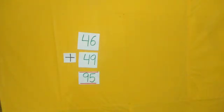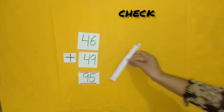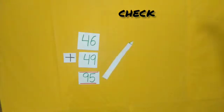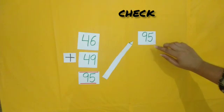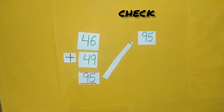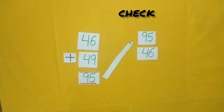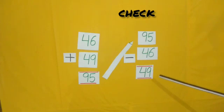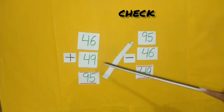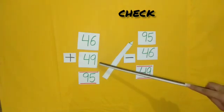What will we do to check this sum? We can also check by subtracting first number from 95. So, when we will subtract 46 from 95, what will we get? Yes, 49. So students, we have checked that our sum is correct.